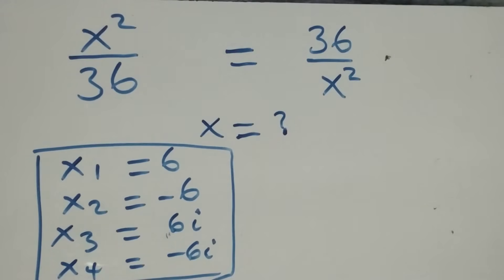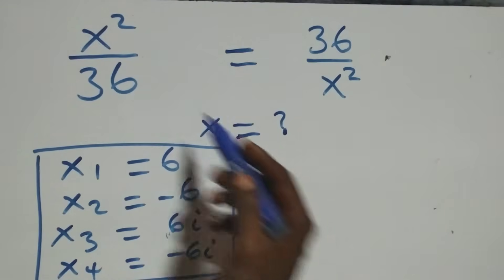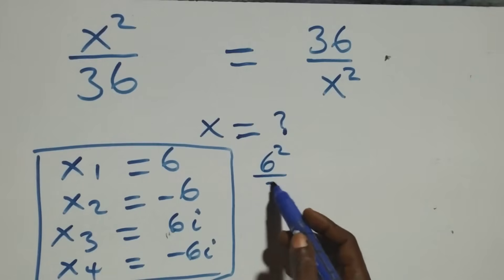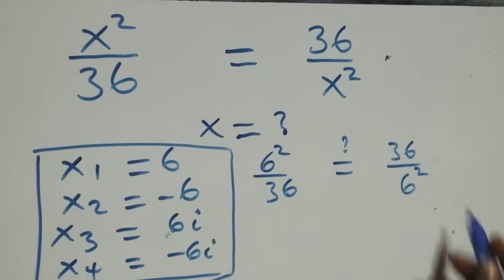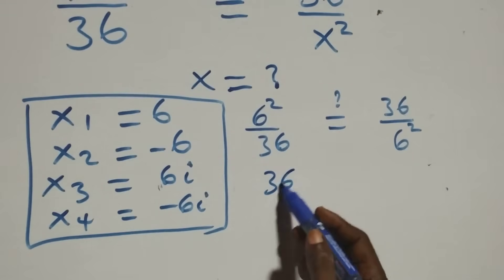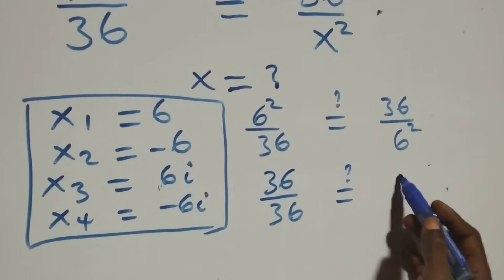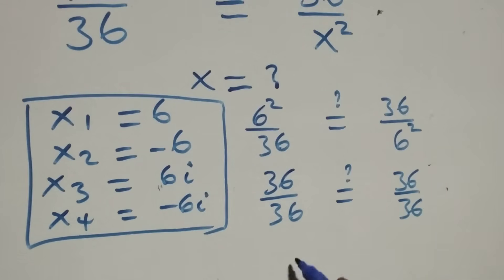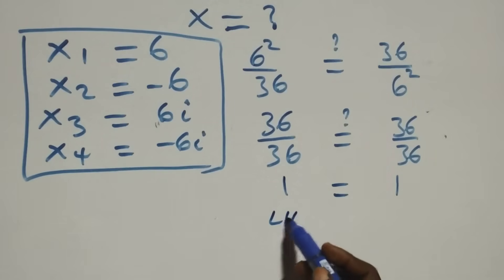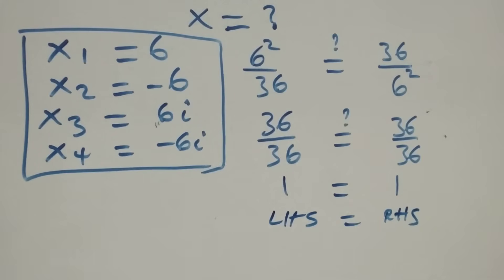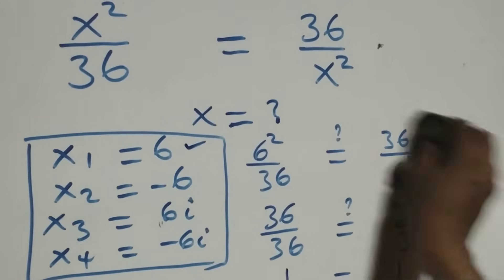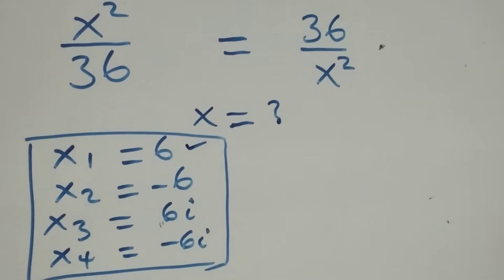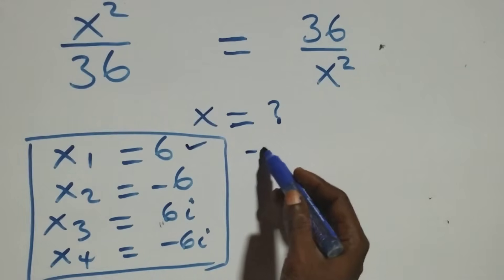Let's verify. When x equals 6, the equation becomes 6² over 36, is it equal to 36 over 6²? That is 36 over 36 equals 36 over 36, which is 1 equals 1. Left-hand side equals right-hand side, so x equals 6 satisfies the equation.